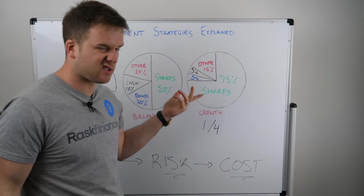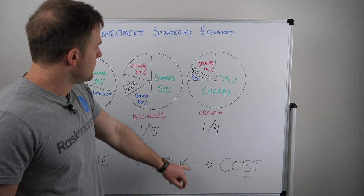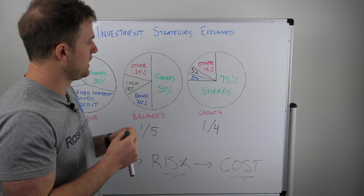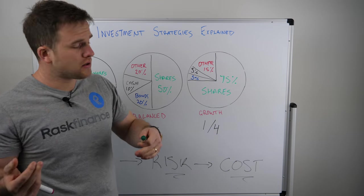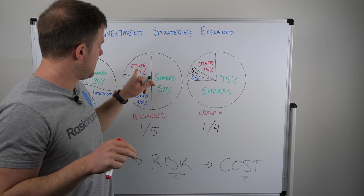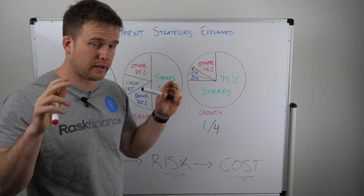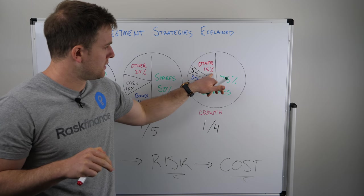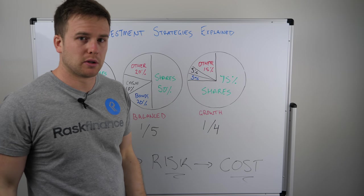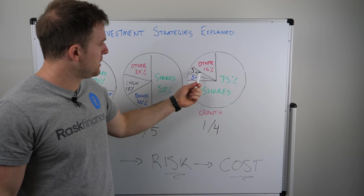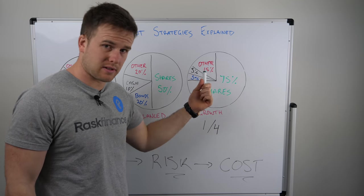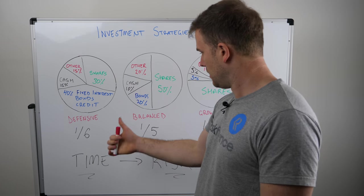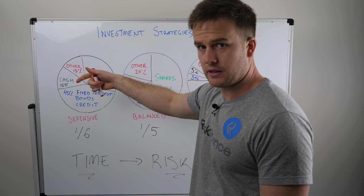A growth strategy — also sometimes called high growth — has about 75% of the money invested in shares, either Australian or international. About 15% is in that 'other' category, which can include infrastructure or alternative investments, which are quite popular in Australia right now. The risk associated with those varies quite a lot, so check your account and consider speaking to a professional. There's a little less in cash and bonds, but some is still there. You can expect the portfolio to go backwards about one in every four years — so going from one in six up to one in four, it's progressively riskier.